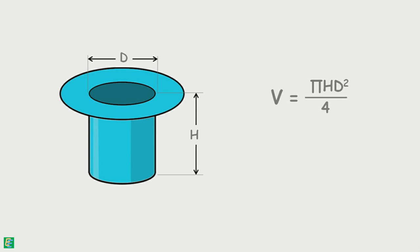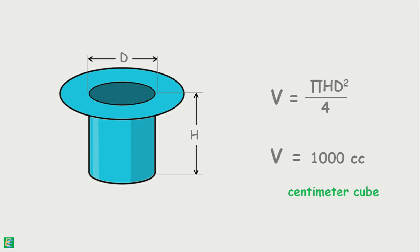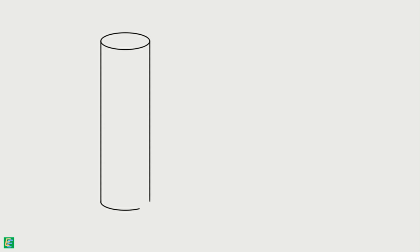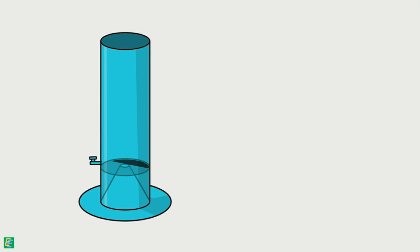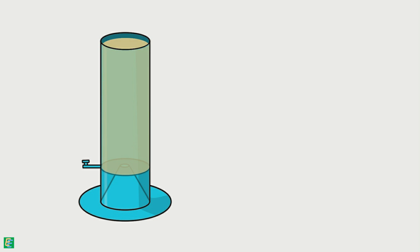The volume of the calibrating container is roughly equal to 1000 cc (cubic centimeters). We take a sand pouring cylinder — a hollow cylinder which has a cone-type structure at the bottom. At the top of that cone there is a small hole so that sand can pass through it. The hole can be opened or closed using a knob provided.